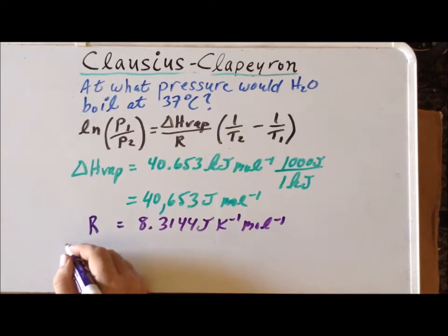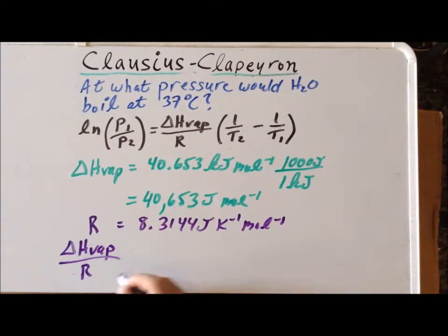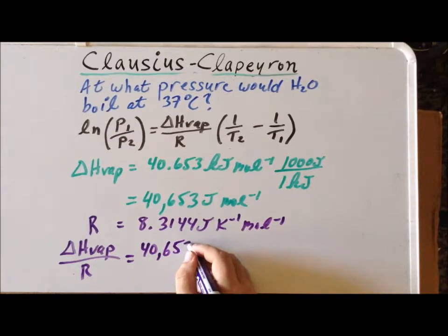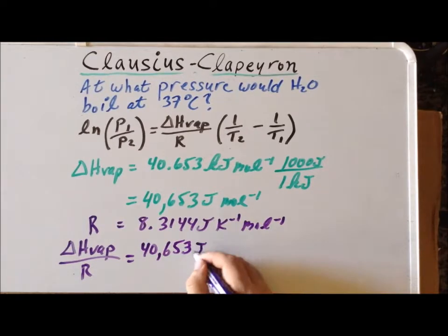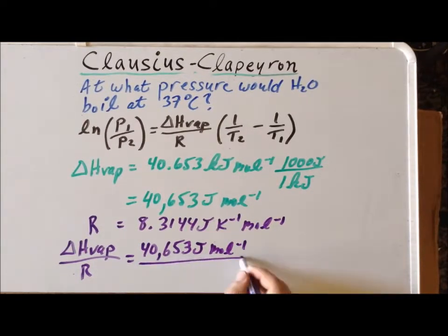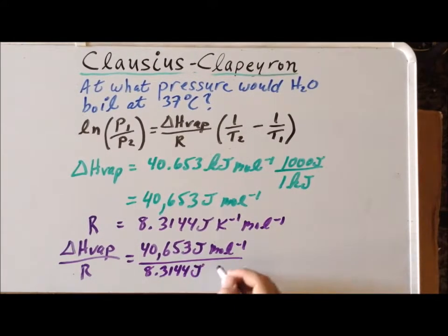So we want to evaluate the ratio of the enthalpy of vaporization of water to R. We see that it's 40,653 joules per mole divided by the gas constant R, 8.3144 joules per Kelvin per mole.